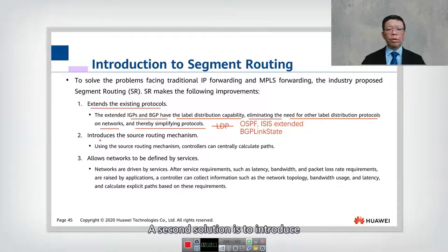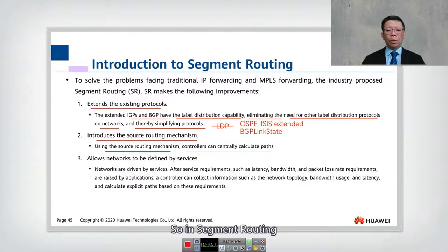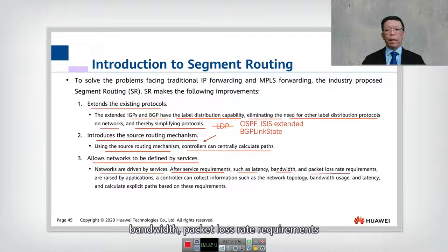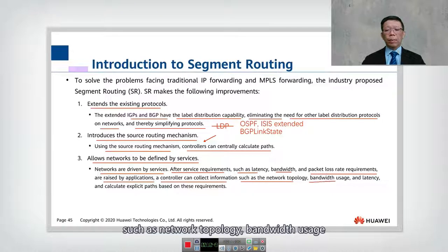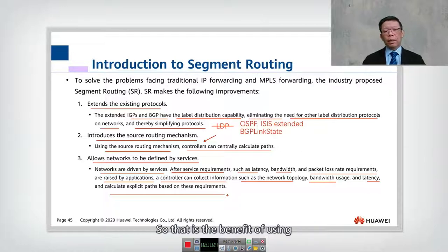A second improvement is introducing a source routing mechanism. While IP routing is destination-based, segment routing uses source routing, and a controller can centrally calculate paths. In segment routing, a controller is introduced. Finally, the network can identify services — networks are driven by services. After service requirements such as latency, bandwidth, and packet loss rate are raised by an application, the controller collects information such as network topology, bandwidth usage, and latency, and calculates an explicit path based on the requirements — meaning different applications can receive different paths. That is the benefit of using segment routing.